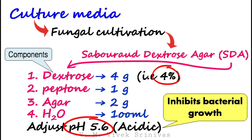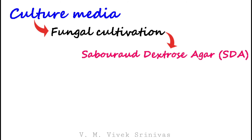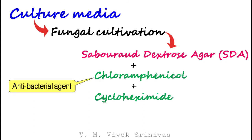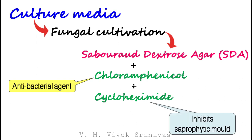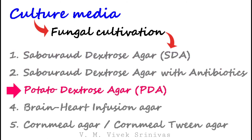So the two important things the fungal medium fulfills are: first, high sugar concentration, and secondly, low pH. For fungal cultivation, sometimes SDA is also added with chloramphenicol and cyclohexamide. Chloramphenicol is an antibacterial agent used to prevent bacterial growth. Cyclohexamide is used to inhibit saprophytic molds. Other culture media used apart from SDA with antibiotics are potato dextrose agar, brain heart infusion agar, and cornmeal or cornmeal Tween agar.